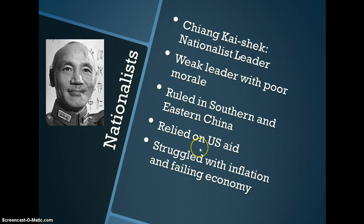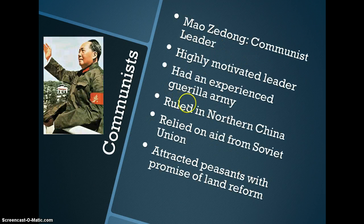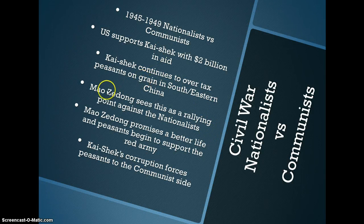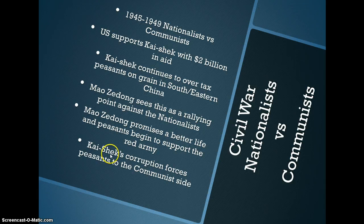Here's some good background on Chiang Kai-shek: he was in southern and eastern China, definitely relied on the U.S., struggled with post-World War II inflation, and was seen as a weak leader. On to Mao — he was highly motivated, had a very experienced guerrilla army, was in northern China, relied on aid from the Soviets, and attracted peasants with his promise of land reform. Chiang did continue to tax the peasants, and Mao saw this as a rallying point to get more support. Mao made promises for a better life, while there was rampant corruption on Chiang Kai-shek's side.